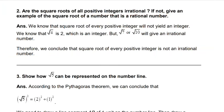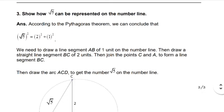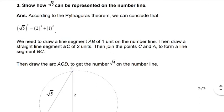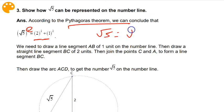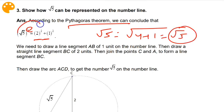Question number three: show that √5 can be represented on the number line. According to Pythagoras: 2² + 1² gives us √(4+1) = √5. So √5 can be written as √(2² + 1²). Using the Pythagorean theorem, this means we have a hypotenuse, a base of 2, and a perpendicular of 1.